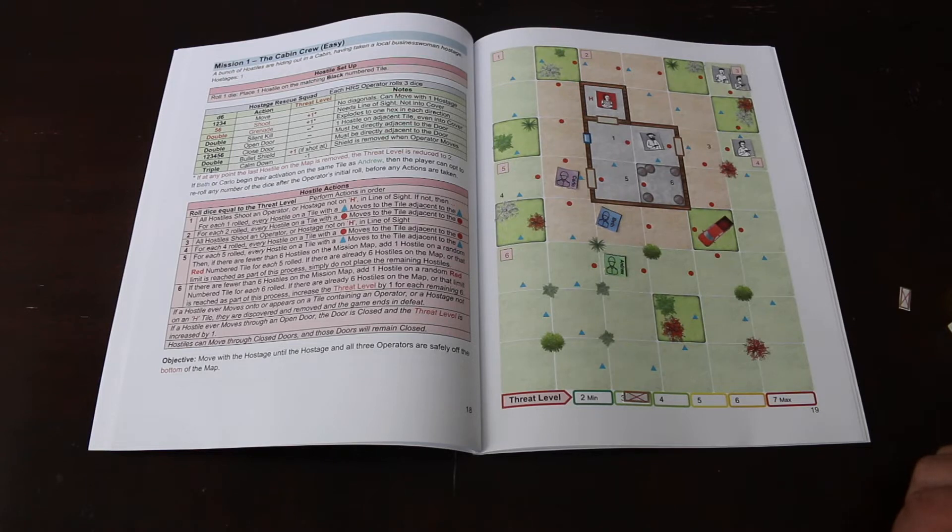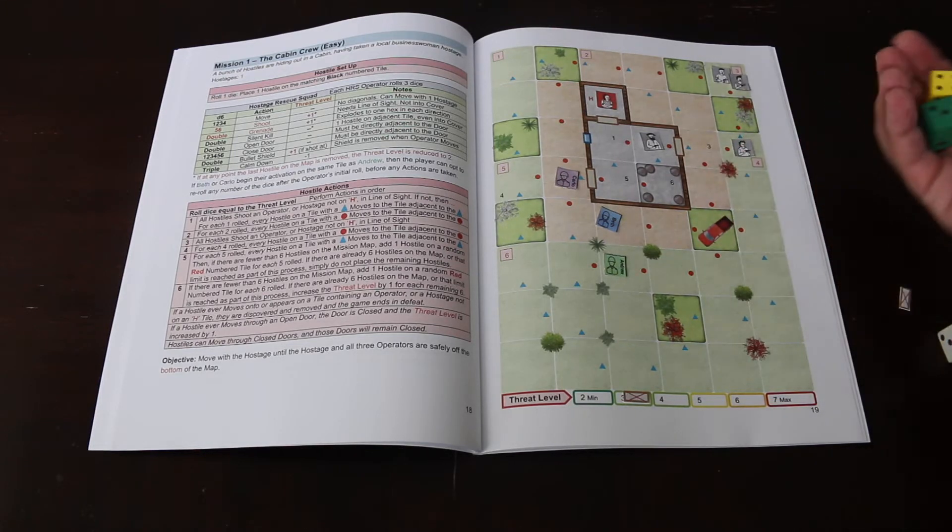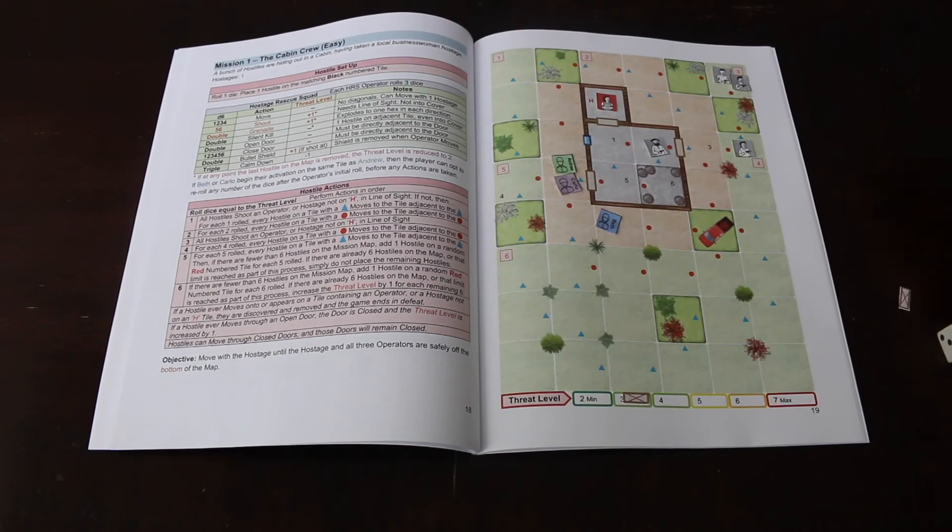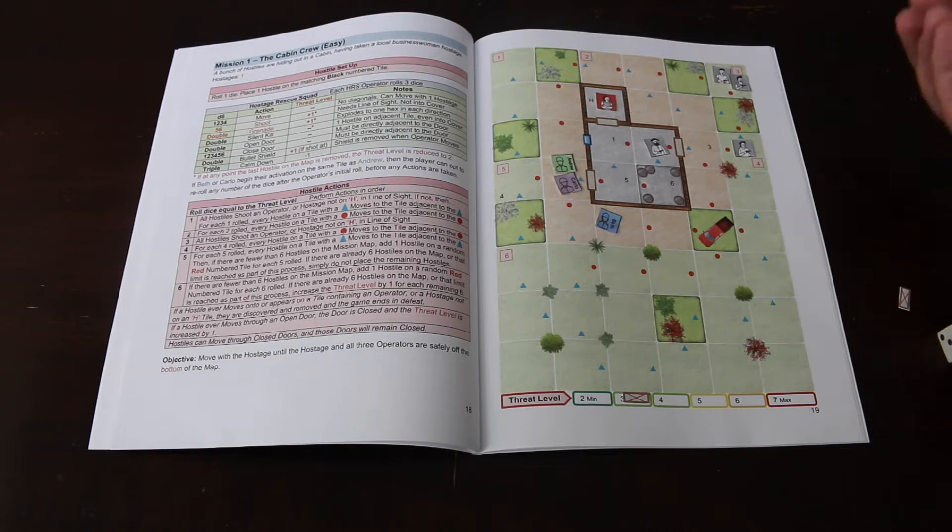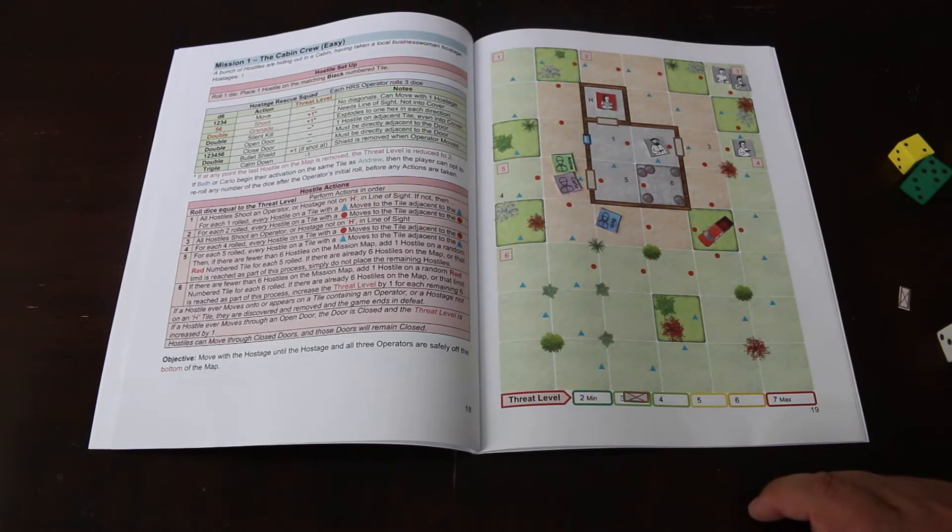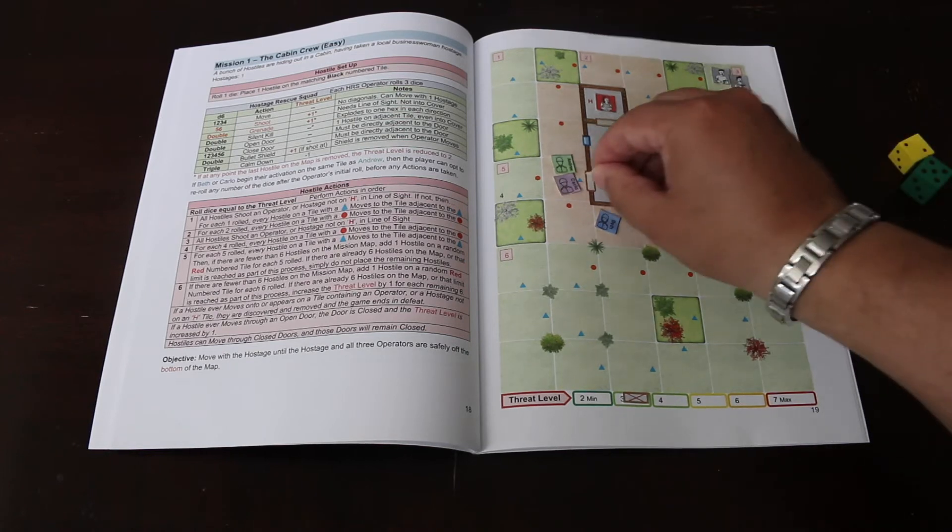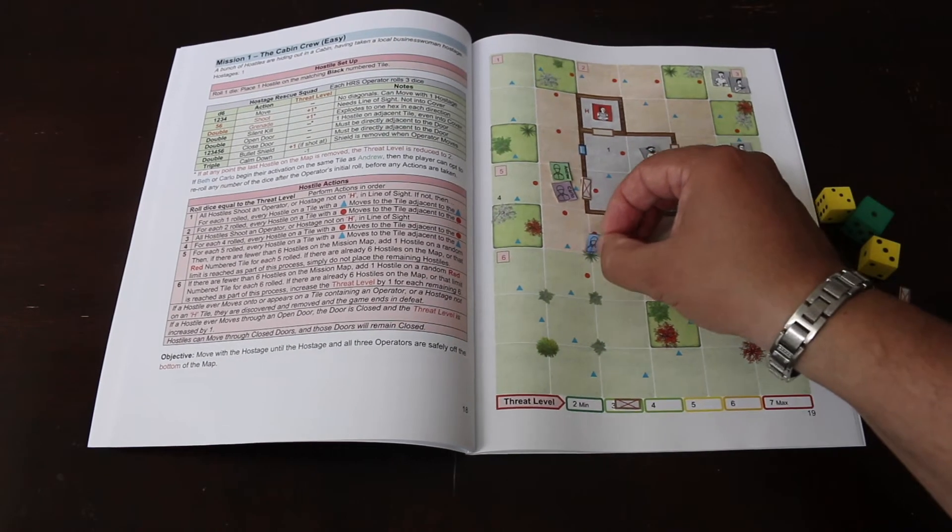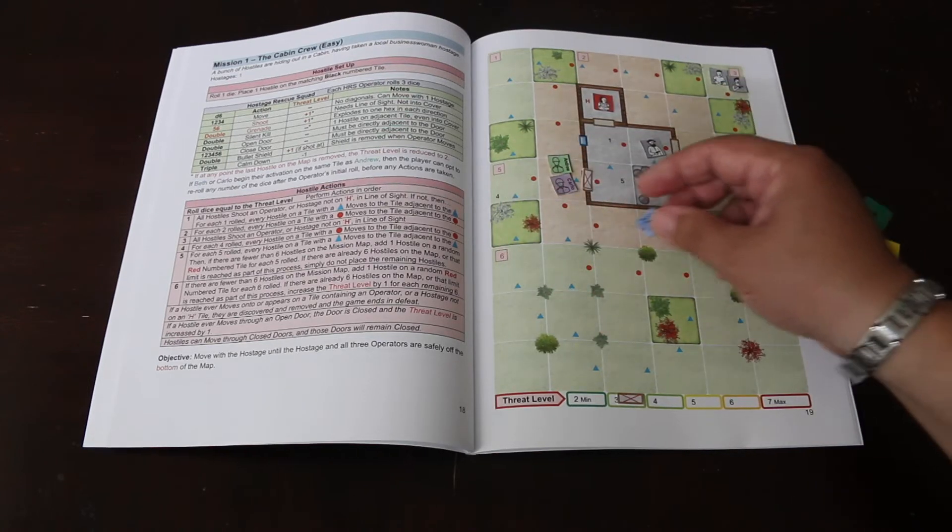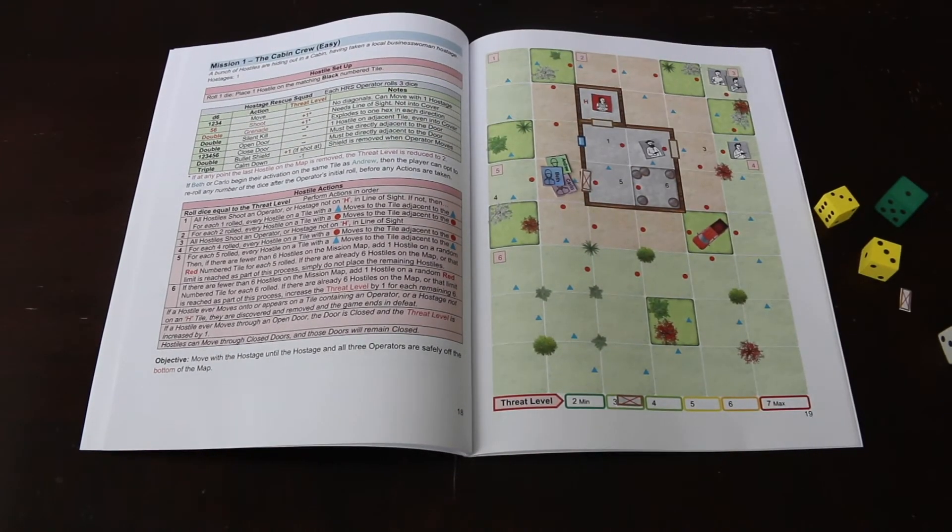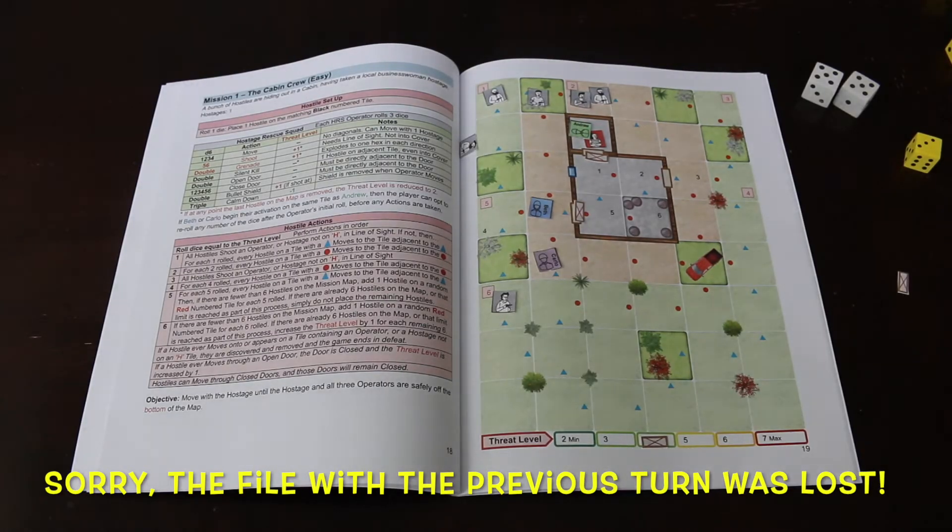Now back to these guys. Andrew goes first and gets three moves. One, two, three. Carlo is going to go. He gets a double, which will allow him to either throw a grenade, do a silent kill, or open the door. He's going to open the door, so he puts a door open marker there. Now we roll for Beth. She gets three moves. She's just going to do two of them and wait right there.